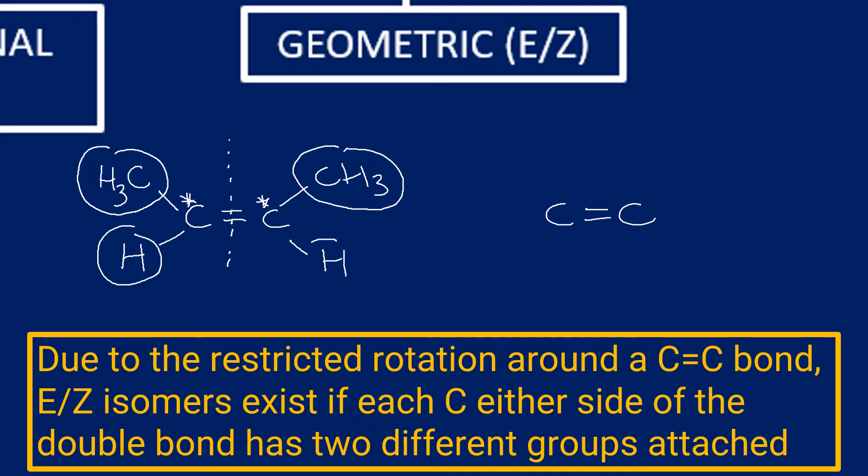So what I can do is if I change the position of those groups, or just one of them, we've now got a different arrangement in space. In this case, the CH3 groups are on opposite sides of the double bond, and on the left hand side the CH3 groups are on the same side.